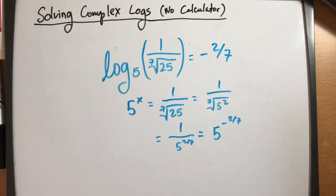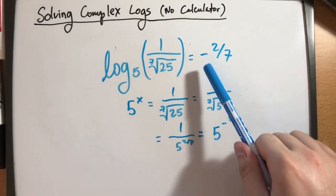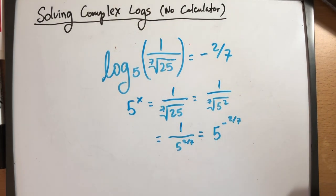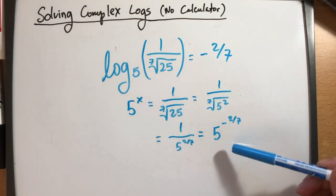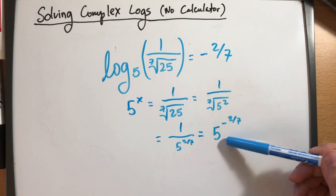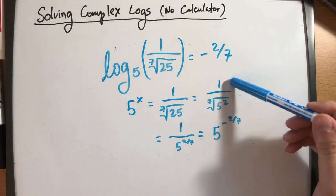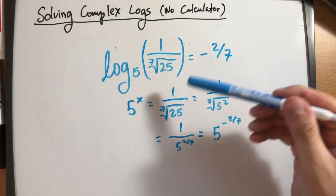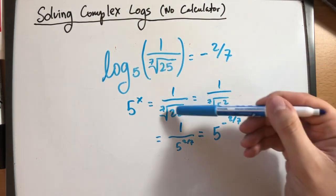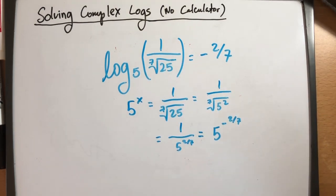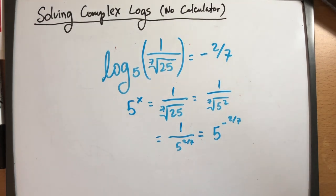That is the exponent. You can prove it by working backwards: 5 raised to negative 2 over 7 is 1 over 5 raised to 2 over 7, which is 1 over the 7th root of 5 squared, which is 1 over the 7th root of 25 — exactly the same thing. That's what makes it hard: learning to think backwards. But once you master that, logs should come a lot easier.